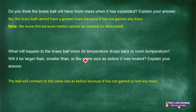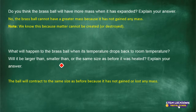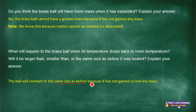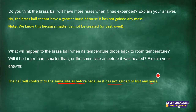In exams or tests they can ask: what will happen when a brass ball's temperature drops to room temperature — will it become larger, smaller, or will it retain its size? This could be a two-mark question. Your first mark: when the ball contracts it will be the same size as before. Your second mark: the reason is that it has not gained or lost any mass. You can further explain that matter cannot be created or destroyed.